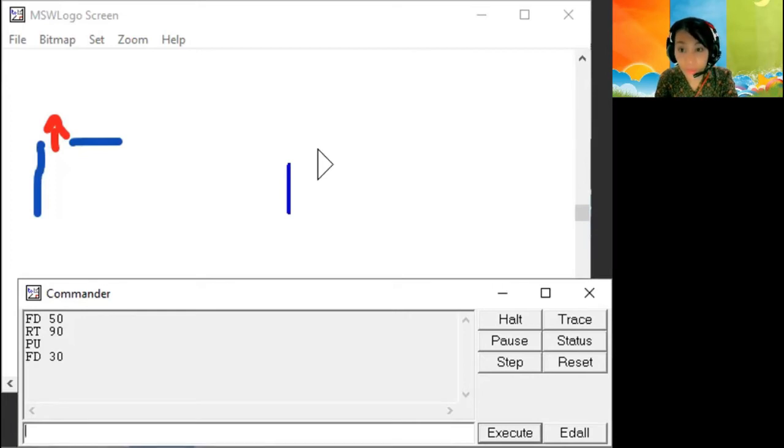we want to start drawing a line again, so we use PD, pen down. And then FD again, for example 50. Okay, now you will see if you use PU or PD, no need to input number or value. Okay, remember that PU and PD, no need to input value or number.